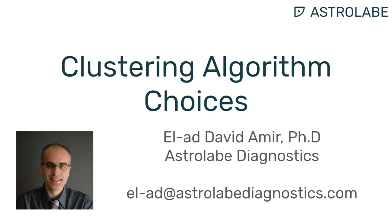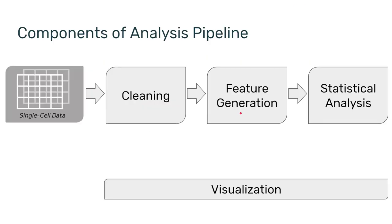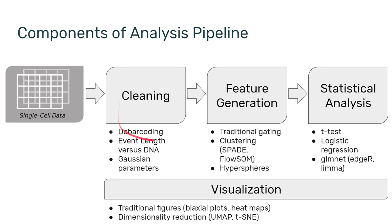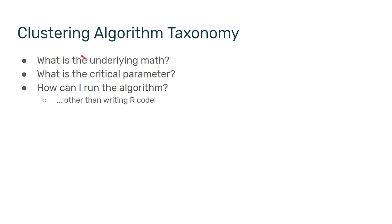In other words, how many clusters do you need to look for? As a quick reminder, in previous videos I talked about the idea of an analysis pipeline where you start with raw data and go through a series of steps to get into insights that can promote your research. I also discussed the idea of a taxonomy of clustering algorithms where you consider the underlying math, the critical parameter, and the technical aspect of finding the algorithm.